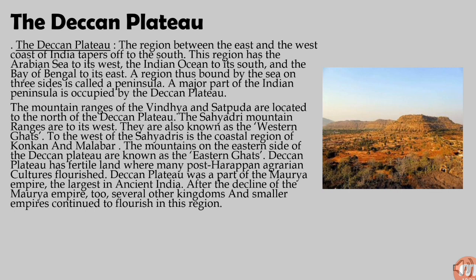After the decline of the Maurya Empire, several other kingdoms and smaller empires continued to flourish in this region. The Deccan Plateau is a large plateau in western and southern India; it rises to 100 meters in the north and to more than 1000 meters in the south, forming a raised triangle within the south-pointing triangle of the Indian coastline.